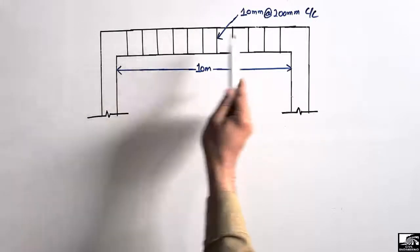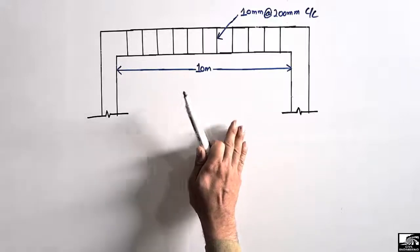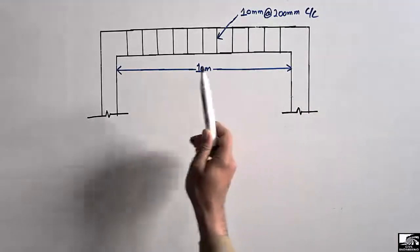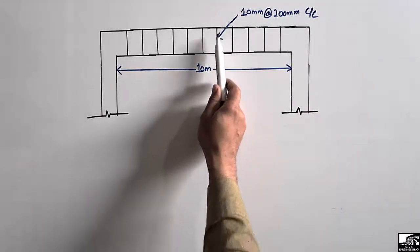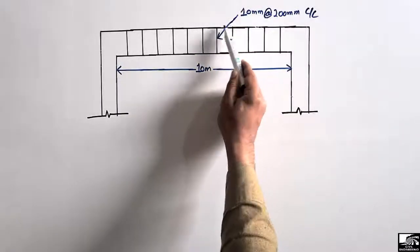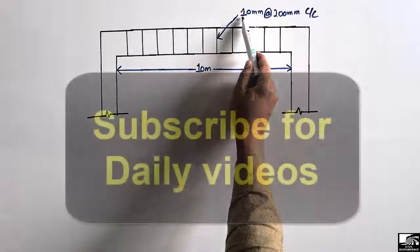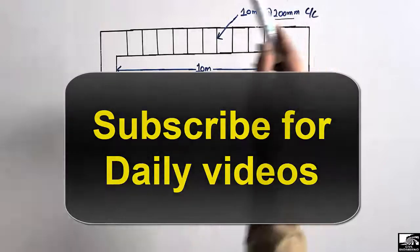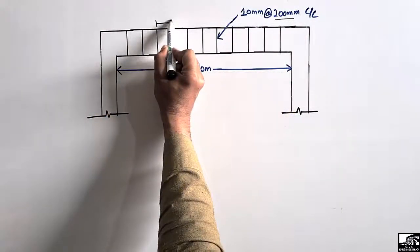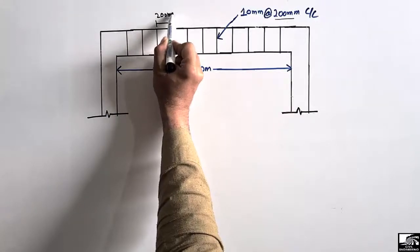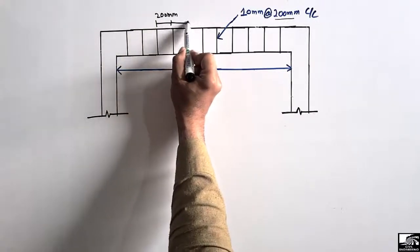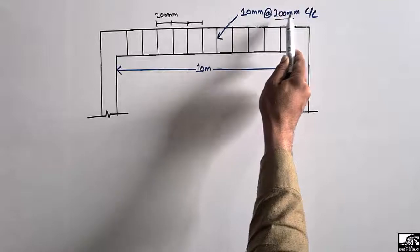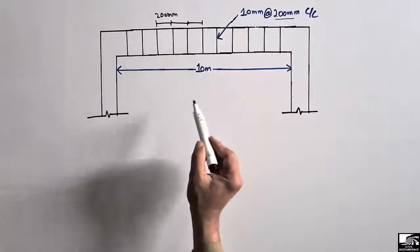We are going to find out the number of stirrups in a beam. This is just an example to show you how to determine the number of stirrups in any kind of beam. The beam has a total length of 10 meters. The stirrups have a bar diameter of 10 mm and are provided at a spacing of 200 mm center to center. So the center to center distance between the stirrups is 200 mm.